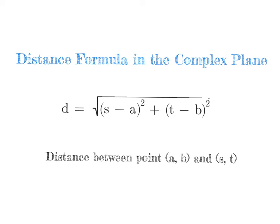Finding the distance between two complex numbers is very similar to finding the distance between two points in a regular xy-axis. It's really just the distance formula, except instead of using x1, y1, x2, y2, they're just using different variables because it's no longer in an xy-axis. You can take any complex number, write it as a coordinate in a complex plane, and then use the distance formula as we've done many times before.